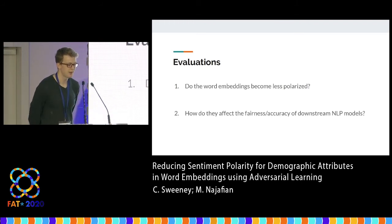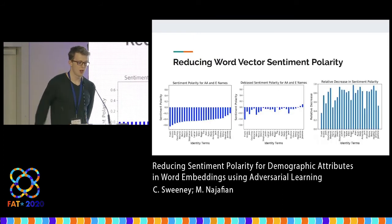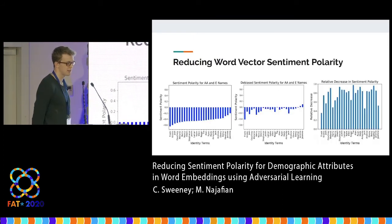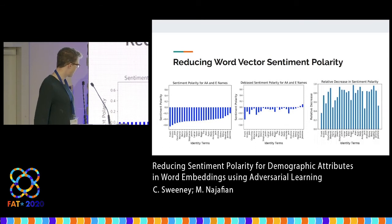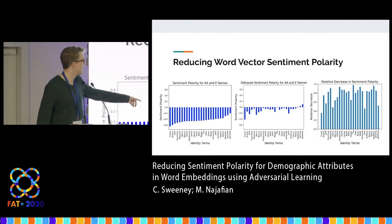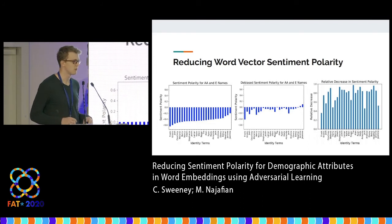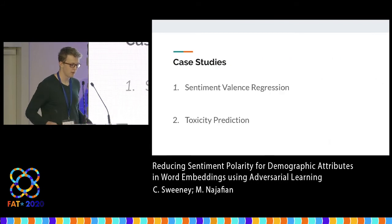For evaluations, we want to think about: do the word embeddings become less polarized after applying this technique, and how do they affect the fairness of downstream NLP models? This graph shows sentiment polarity for names that tend to belong to African-American groups versus European-American groups. On the left is the sentiment polarity before applying our technique — it's pretty large for all of these names. After applying our technique, we minimize the sentiment polarity significantly, with much less negative leaning for all of these word vectors. The paper discusses how this doesn't distort the vector space — words tend to retain the same semantic relation to surrounding words after applying our technique.